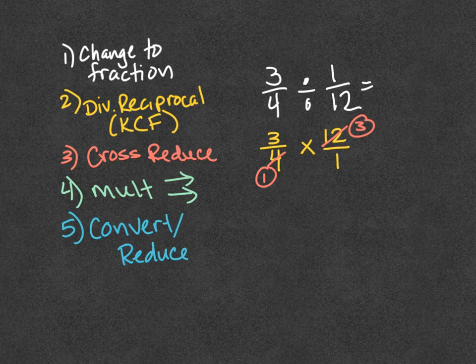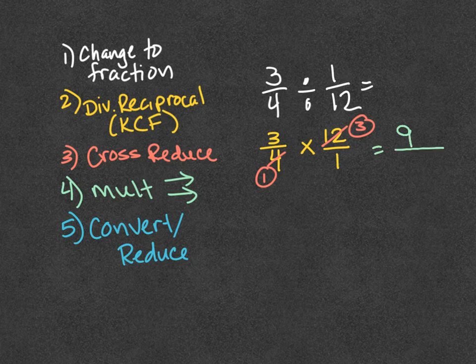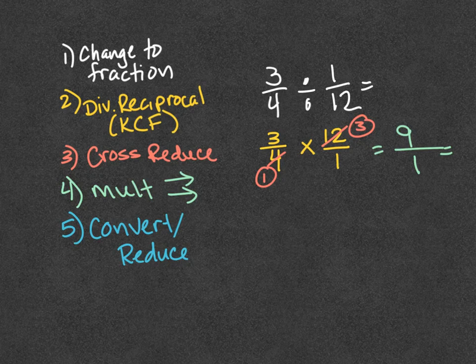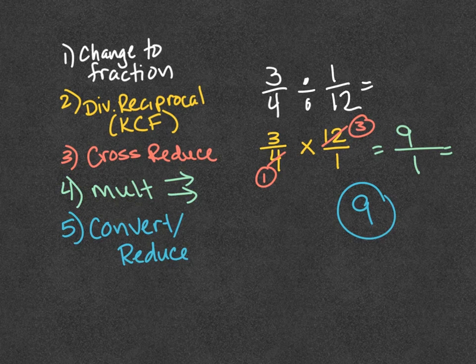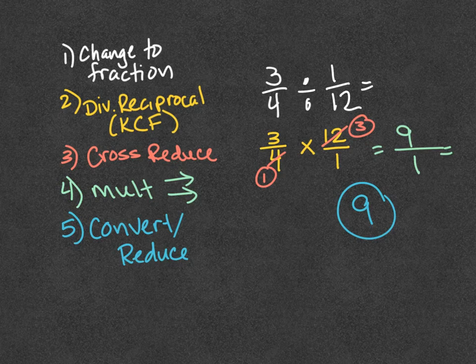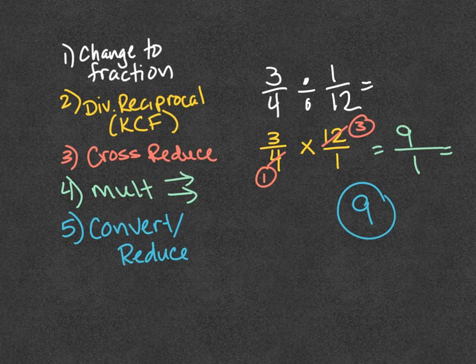Then, I will multiply straight across. 3 times 3 is 9, 1 times 1 is 1. 1 times 1, convert it or reduce it. Well, that 9 divided by 1 is simply 9. My answer is 9. I'm done. It will be, if I take 3/4 on the number line, and I chopped it, the whole amount into 12 equal pieces, it would take 9 of those 12ths to build 3/4. Of course, that's what the answer is saying.